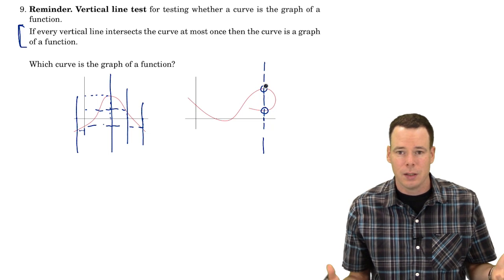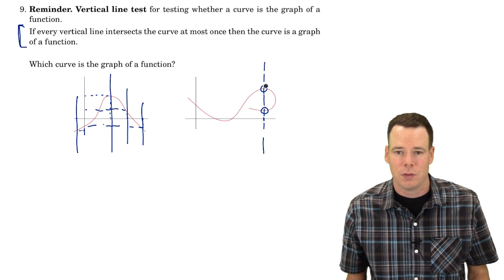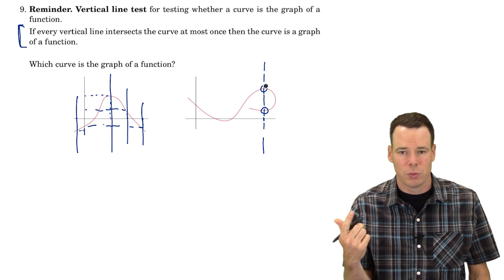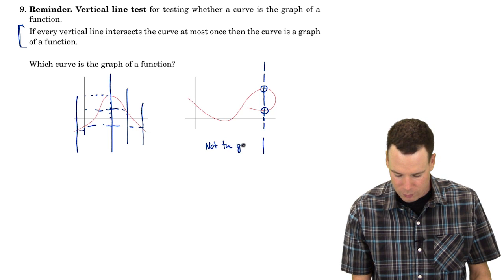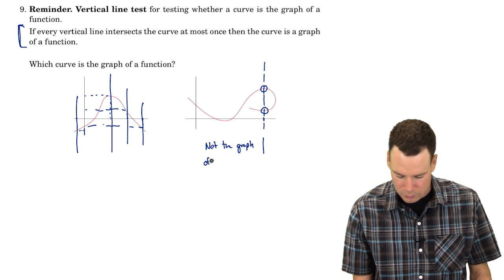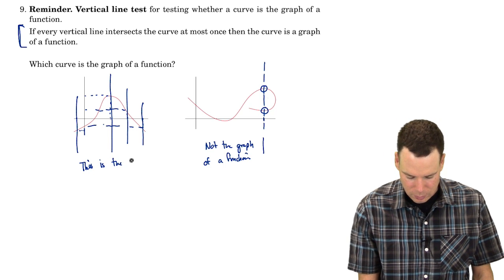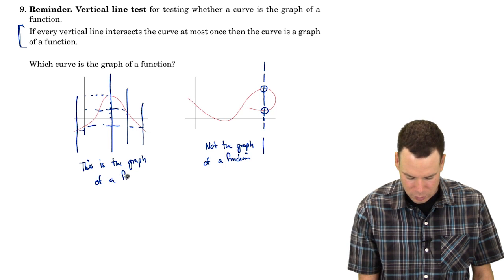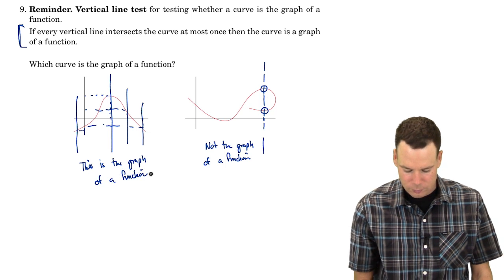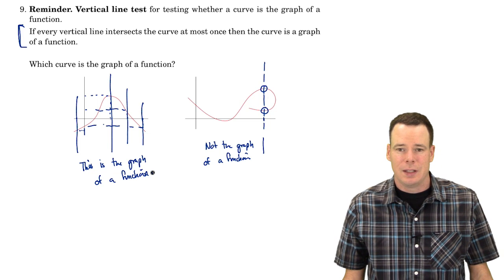This one, I can't decide what to take as an output. It's giving me two outputs, and that's not the definition of a function. For one input, there's one output. So this is not the graph of a function. And this one is. This is the graph of a function. Alright, well that's it for this section. Thanks very much for watching, and we will see you again next time.